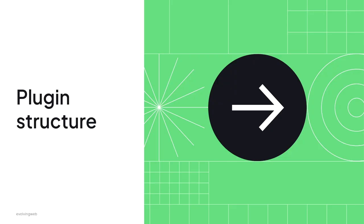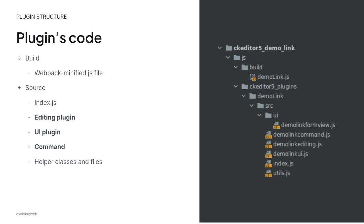The plugin source consists of three plus one parts. First, index.js, which is the starting point. Then the editing plugin, the UI plugin, and the command. I have a few extra helper class files to wrap boilerplate code, but the essentials are the editing plugin, UI plugin, command, and index.js to glue things together.